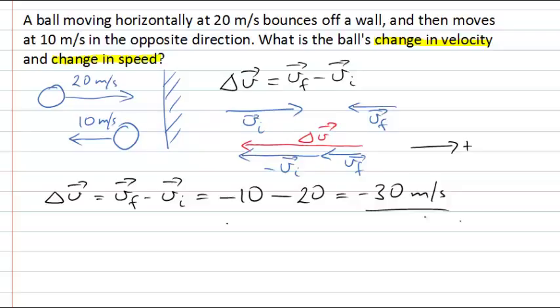What if we want to do the change in speed, the second part of this problem? Well, our speed here, for example our final speed, is simply the magnitude of our final velocity. So our change in speed will simply be our final speed minus our initial speed.